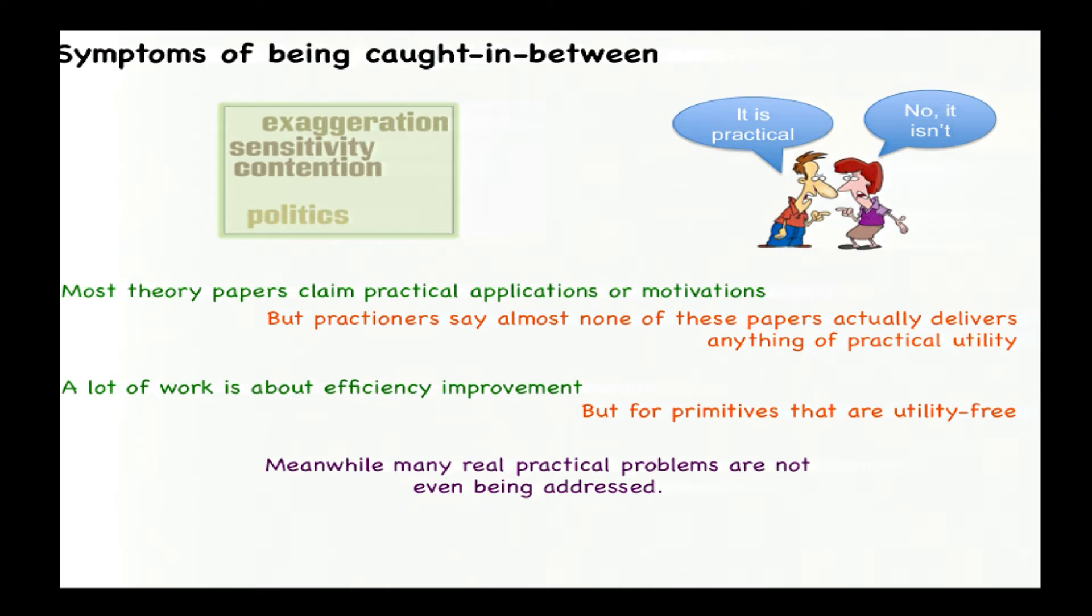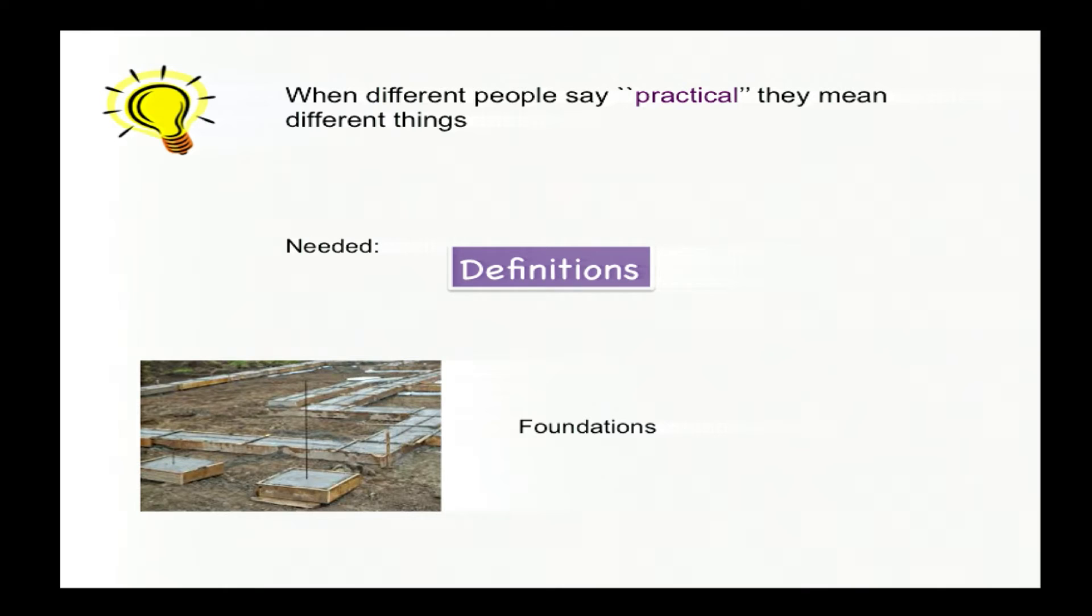Thus, for example, most theory papers claim to have practical motivations and applications. But people who are knowledgeable about practice tell us that it's rare for these papers to actually offer anything of utility. Theoreticians spend significant effort on efficiency improvements to their schemes based on the apparently genuine feeling that this aids practice. But for the most part, practitioners feel that they're improving efficiency for things nobody wants to use. And meanwhile, there are real practical problems out there which aren't even being addressed. And I've kind of grown interested in this partly because of my history as a sociological phenomenon and thought it'd be interesting to speculate about why these things happen. And the first thing that occurs to me is that perhaps this area lacks definitional foundations in the sense that the discrepancies in claims that we are seeing arise from different people meaning different things when they use the word practical.